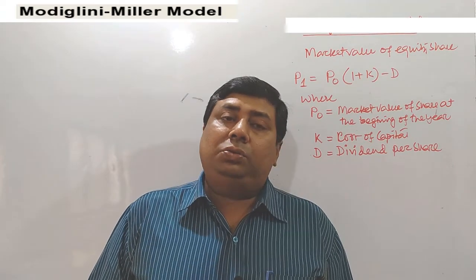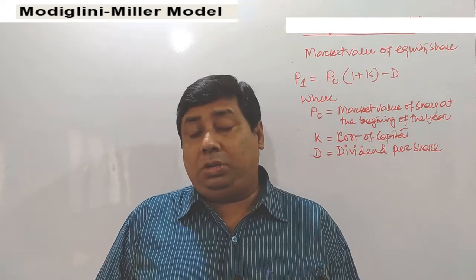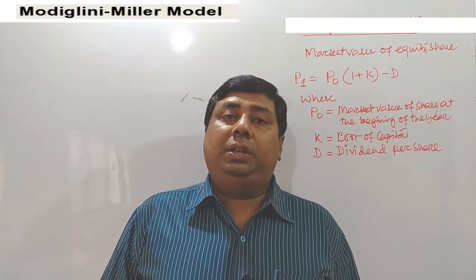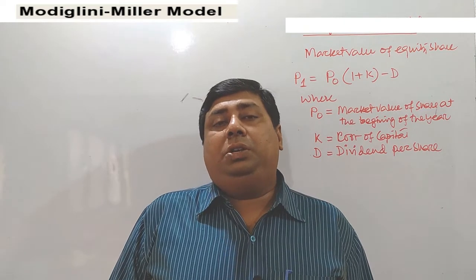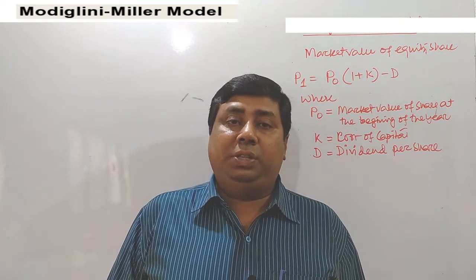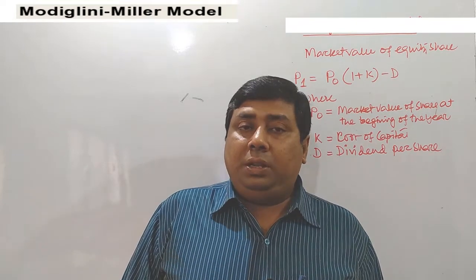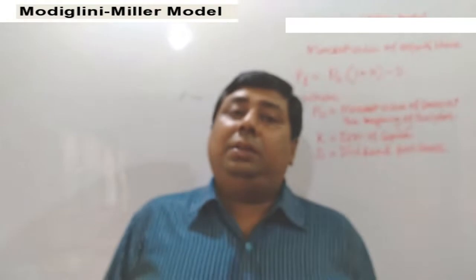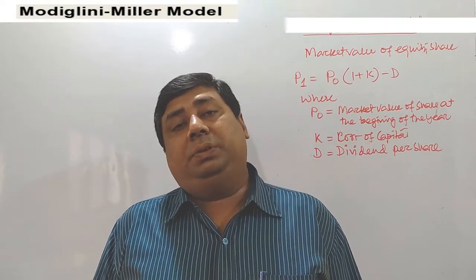Now we need to solve another model of dividend policy, known as the Modigliani and Miller model. The Modigliani and Miller model is basically categorized as a dividend irrelevance model. With this model, Modigliani and Miller prove that the market value per share does not directly relate to the payment of dividend.